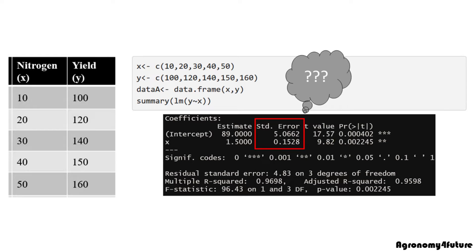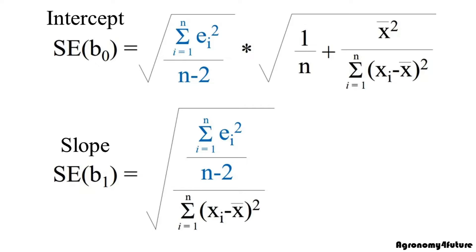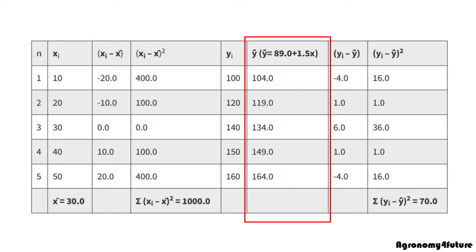Please look at the red box. Here is the equation to obtain standard error of intercept and slope. The following question would be what is the equation inside the red box? Let's calculate step by step. First, let's calculate the expected y.